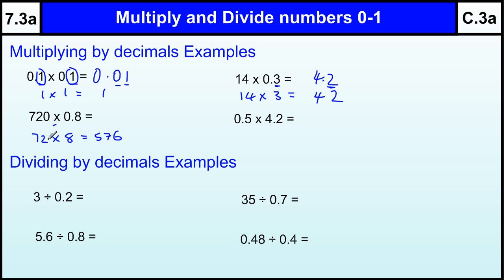Now, if it was 720 times by 8, we'd have an extra 0 on the end, and then where does the decimal point go? Well, we've got one number after the decimal point, we need to put the decimal point in 1 before the end, so 576.0, but also we don't need the point 0, so much better to write 576.